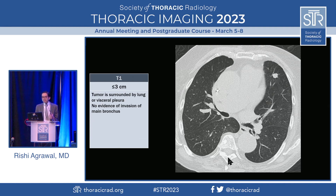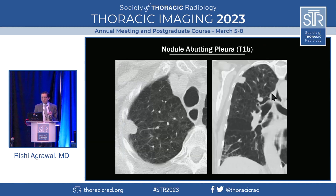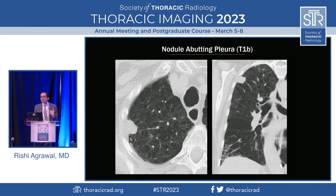Here's an example of a T1 lesion — just a nodule sitting in a sea of lung. A nodule can touch the pleura, but from a radiologic perspective, if there's nothing to indicate actual invasion, that's up for a pathologist to determine.